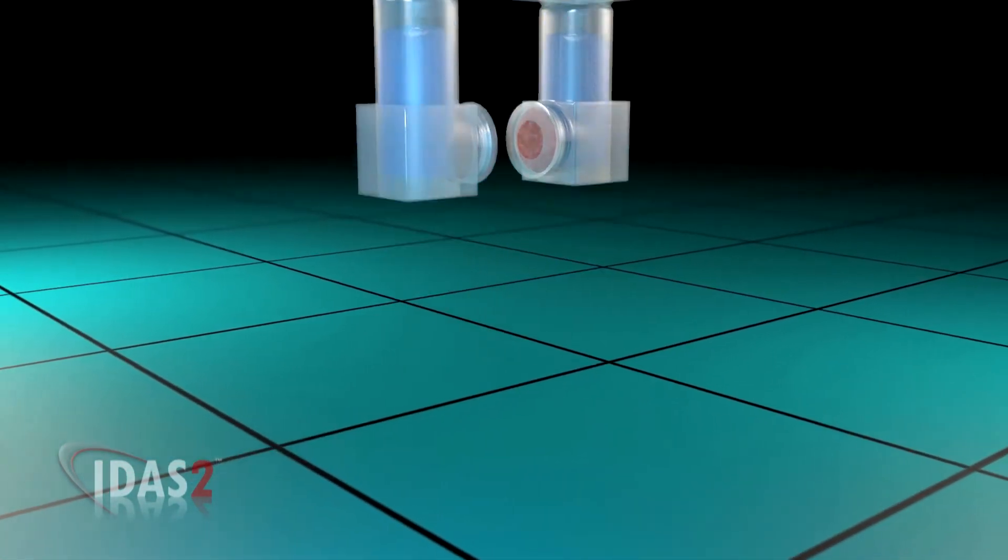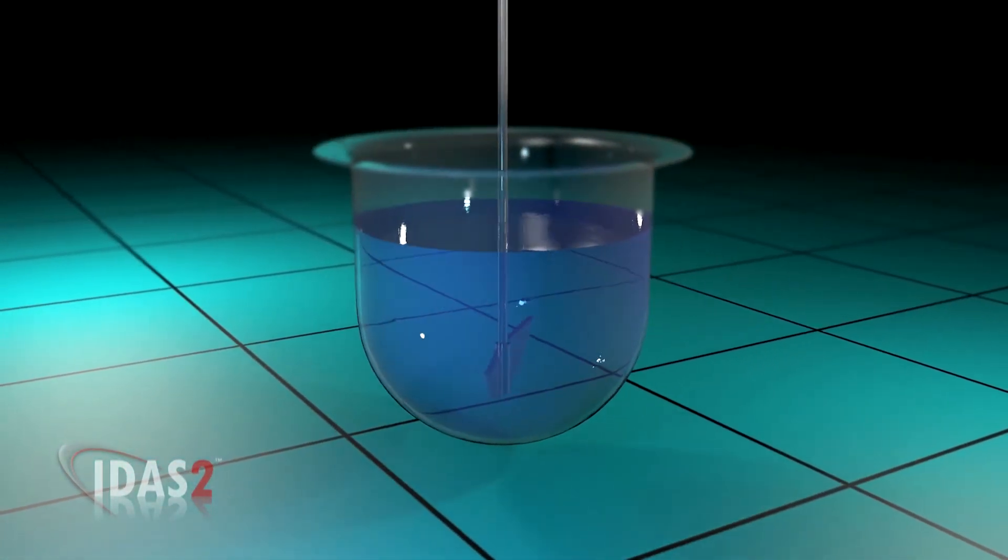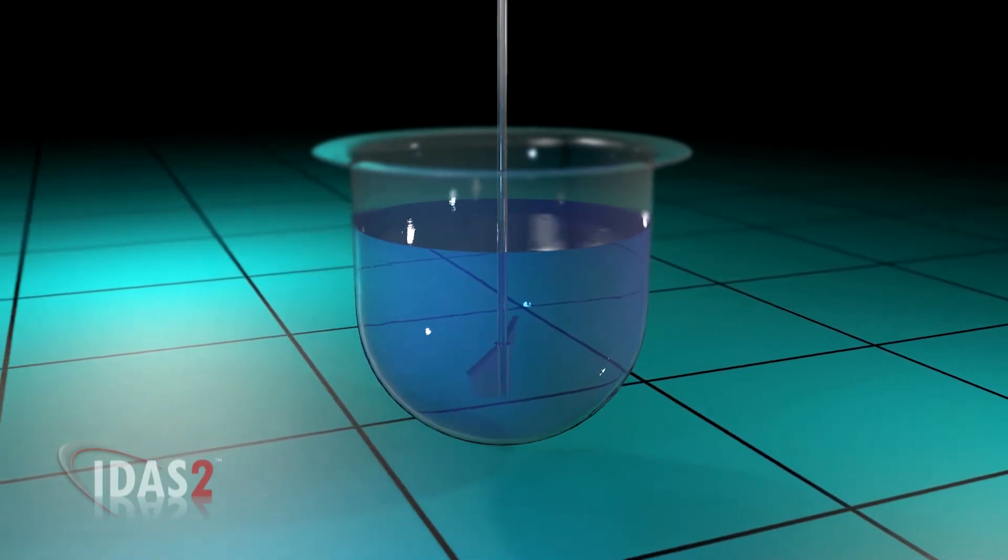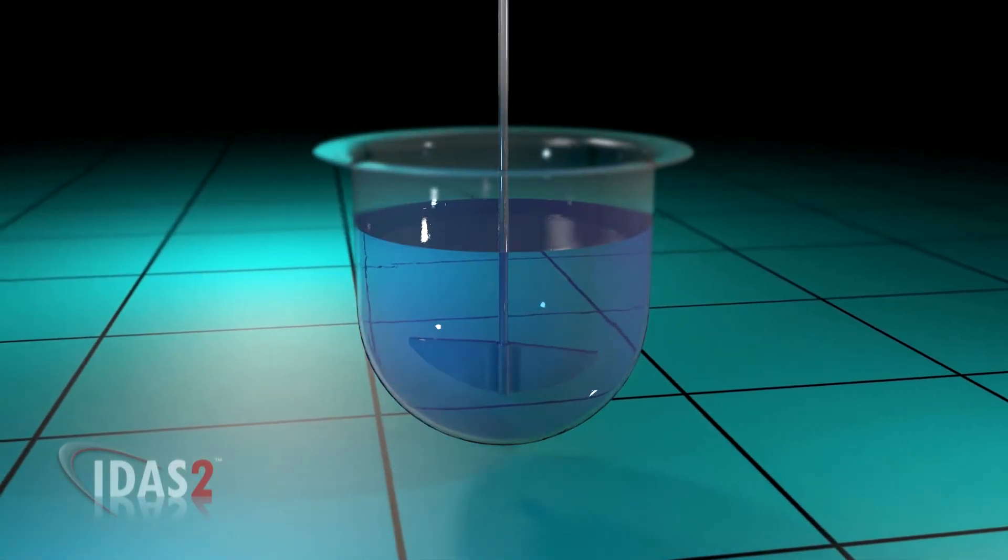Two IDAS2 units are then mounted onto a specially modified dissolution vessel cover and lowered into the 500 milliliter dissolution vessel.